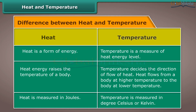The table shows the difference between heat and temperature. Heat is a form of energy; temperature is a measure of heat energy level. Heat energy raises the temperature of a body, while temperature decides the direction of flow of heat. Heat flows from a body at higher temperature to the body at lower temperature. Heat is measured in joules; temperature is measured in degree Celsius or Kelvin.